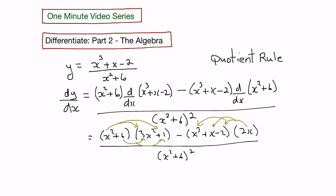We don't usually bother with the bottom part, we just leave it as x squared plus 6 squared when we're working with the quotient rule.